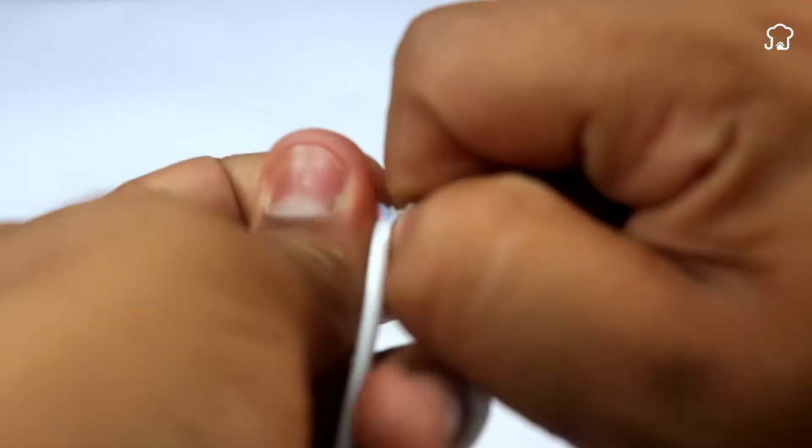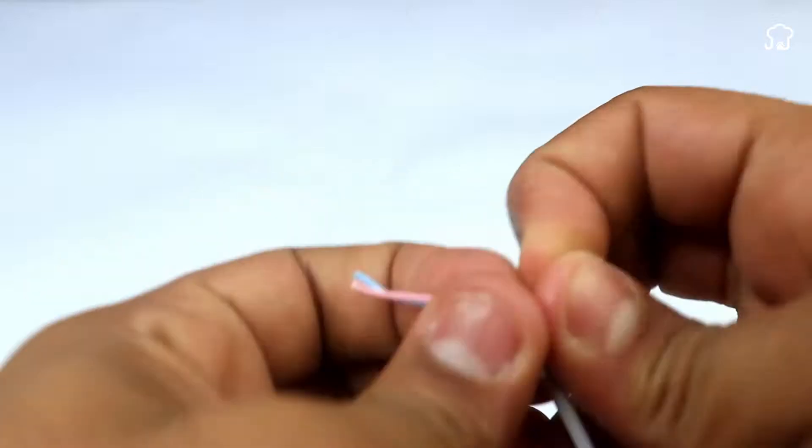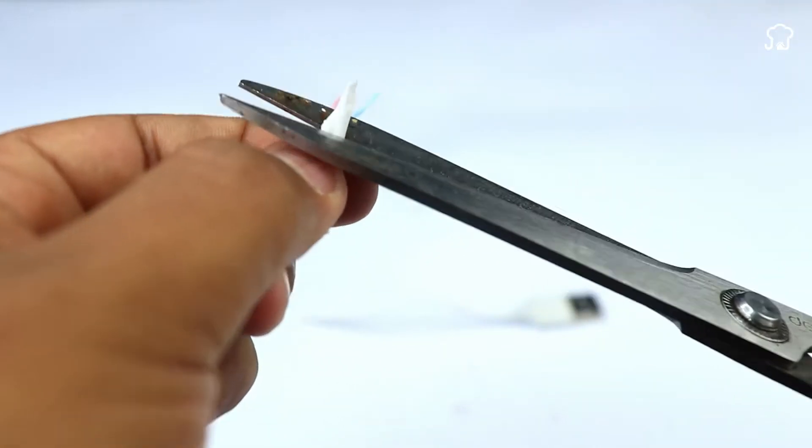Then, repeat this procedure with the other cable, making sure to completely remove the plastic cover to expose the internal wires.